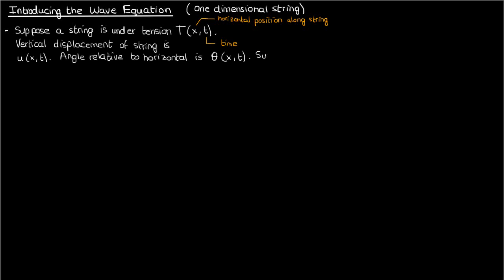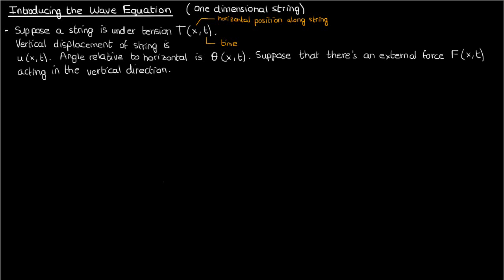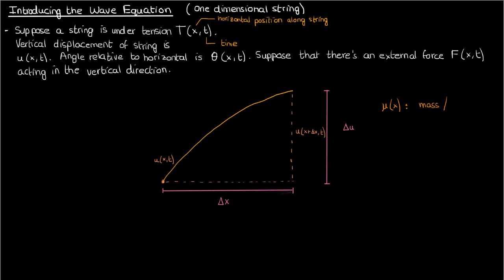Let's also suppose that there's an external force capital F of x and t acting in the vertical direction only. What we're going to do is consider a small string element of length delta x in the horizontal direction. The vertical rise of the string is delta u, and the mass per unit length of the string is mu of x.